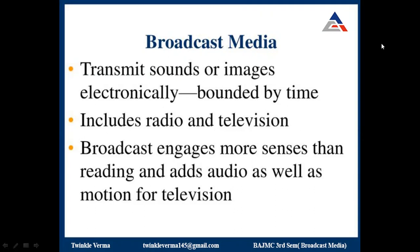AM radio came into popular use around 1920 with the spread of vacuum tube radio transmitters and receivers. Before this, all forms of electronic communication were one-to-one, with the message intended for a single recipient. The term broadcasting evolved from its use as the agricultural method of sowing seeds in a field by casting them broadly, and was later adopted for describing the widespread distribution of information by printed materials or by telegraph.